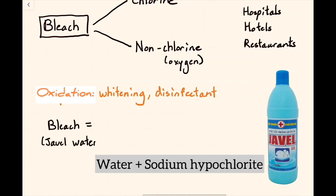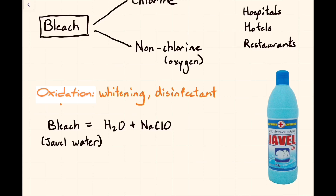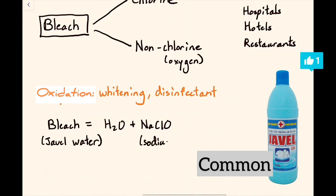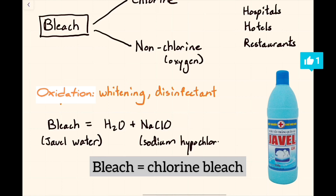It is composed of water and sodium hypochlorite, NaClO. It is still the most common form of bleach that we use today. When we say bleach, we usually mean chlorine bleach.